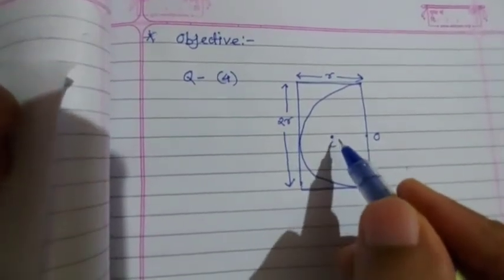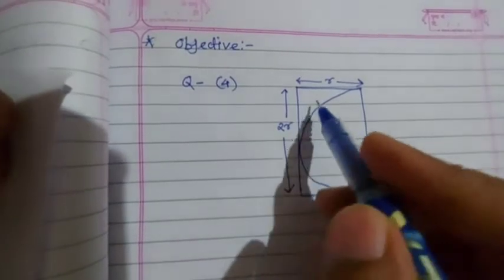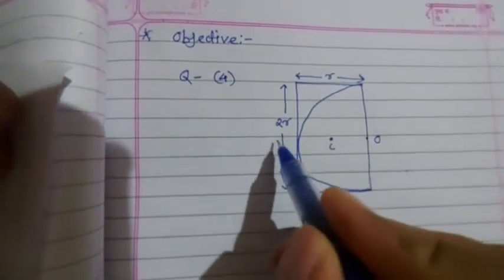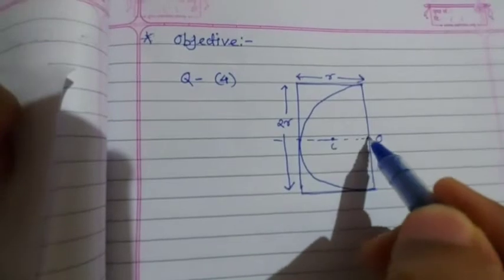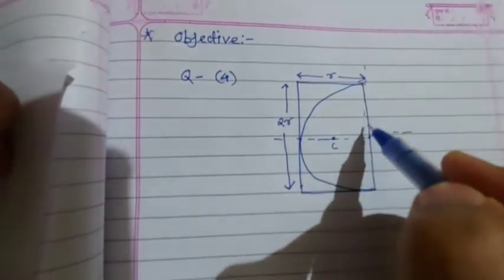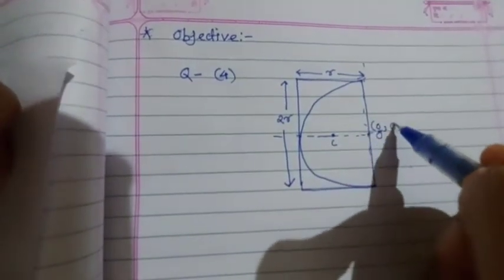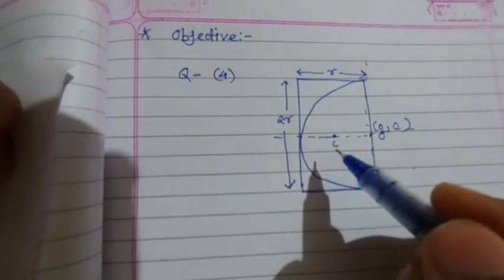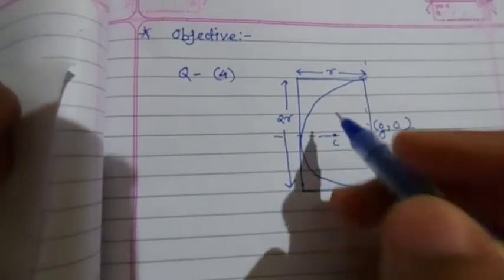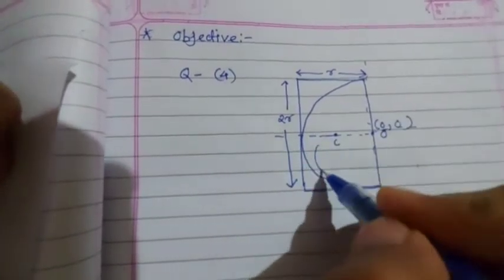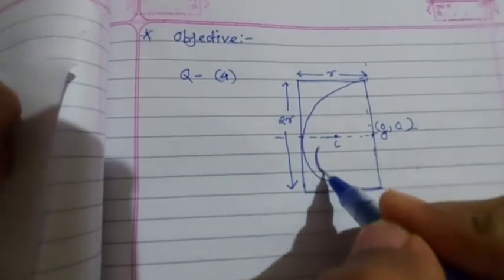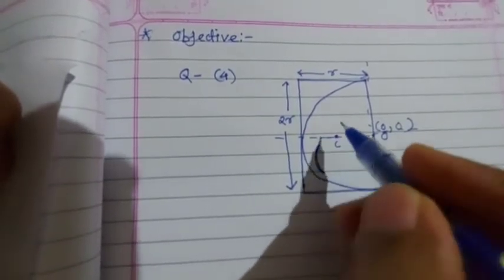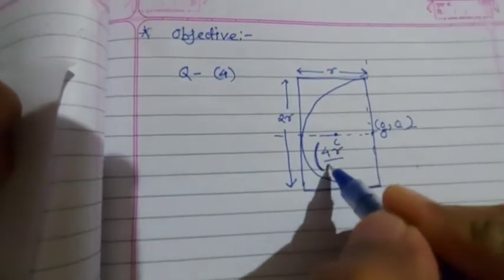Let's take the point O as the origin. This is (0, 0). As we know that for semicircular plate, center of mass is 4r/3π.